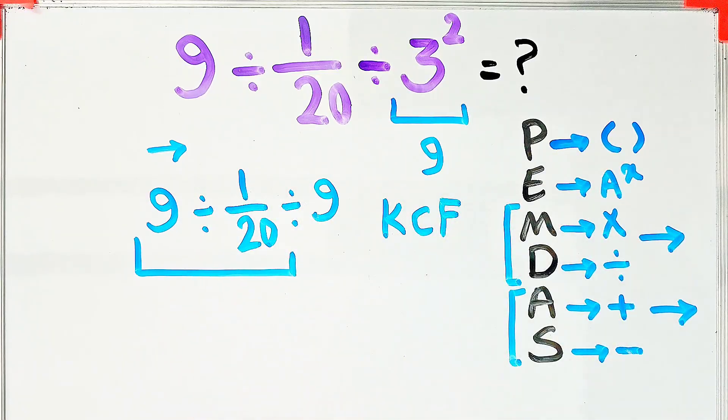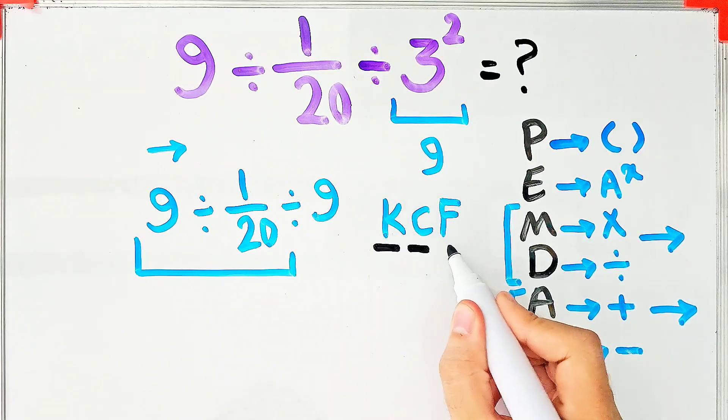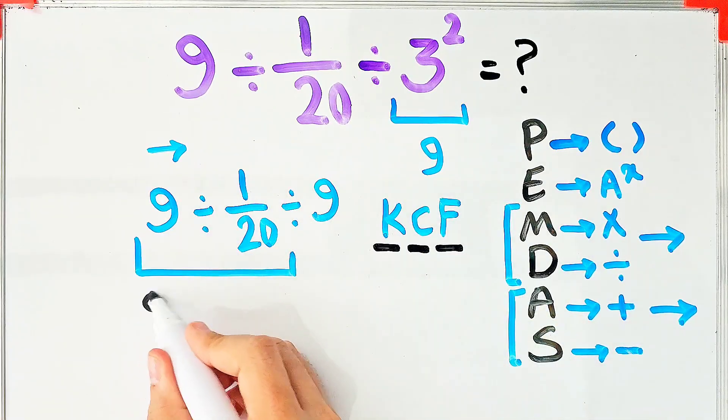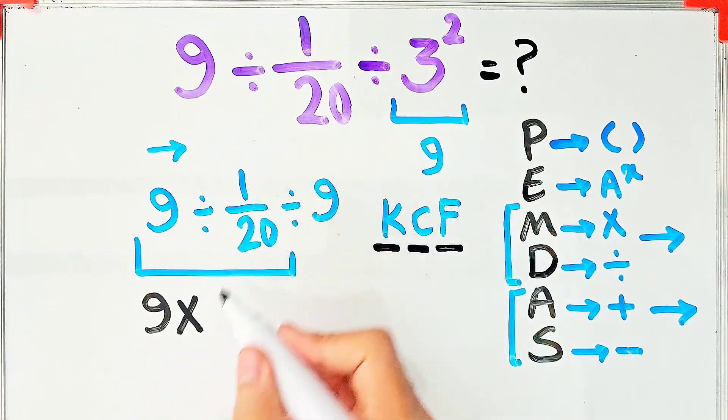In this rule, K stands for keep, C stands for change, and F stands for flip. We keep the first number as it is, then we change the sign, then we flip the second fraction.